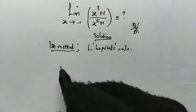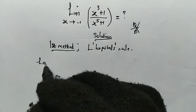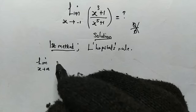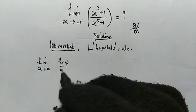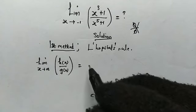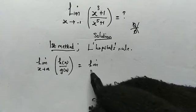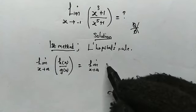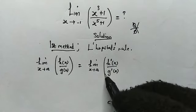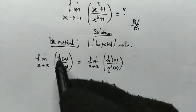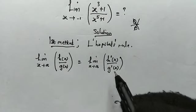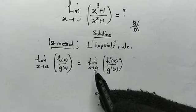L'Hôpital's rule states that the limit as x is approaching a of two functions h(x) divided by g(x) is also equal to the limit as x is approaching a of the derivative of the upper function divided by the derivative of the bottom function — that is, h prime of x divided by g prime of x.